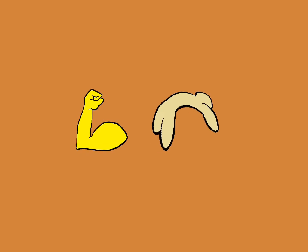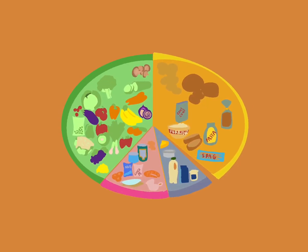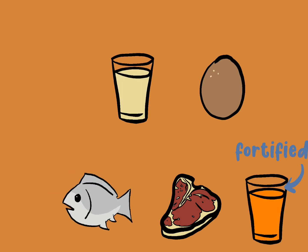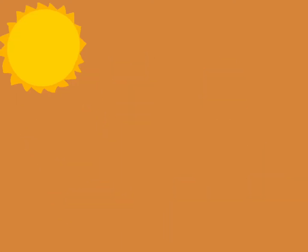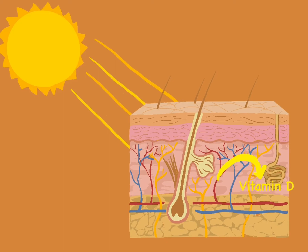Vitamin D deficiency presents as rickets in children and osteomalacia in adults. Foods that are rich in vitamin D include milk, eggs, red meat, oily fish and fortified products. But the richest source of vitamin D is produced in the skin when exposed to sunlight.